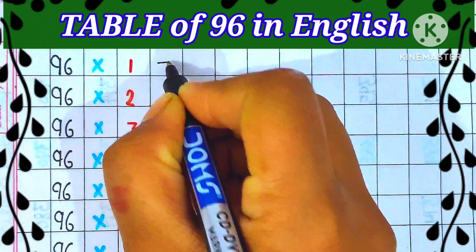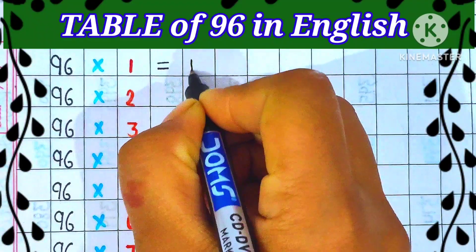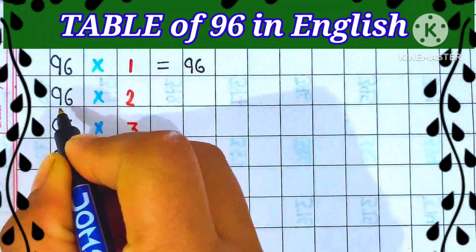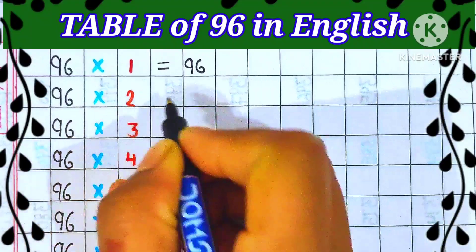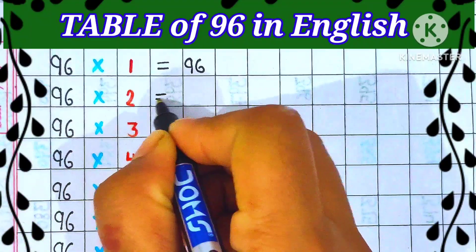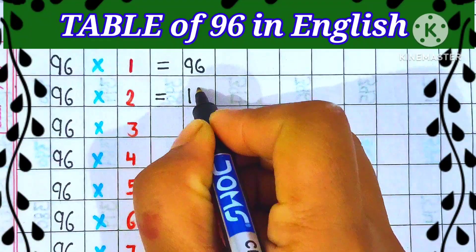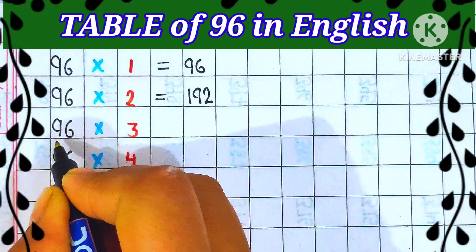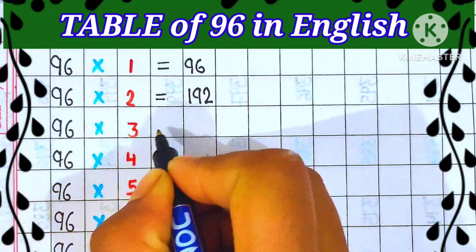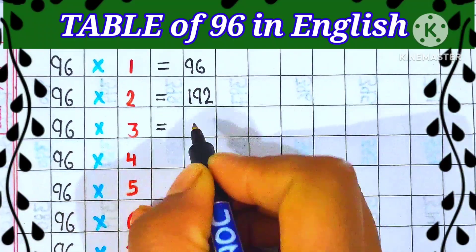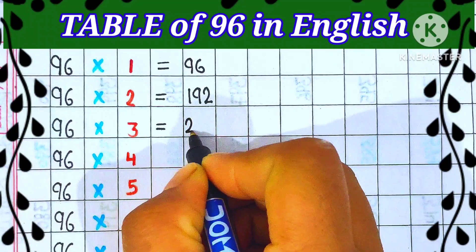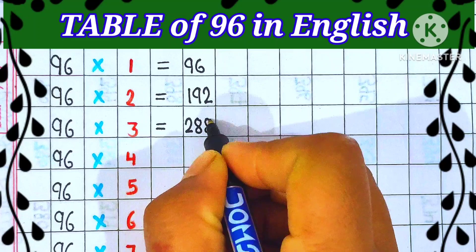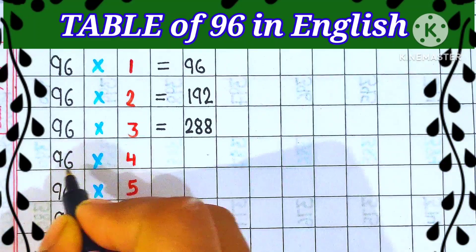96 ones are 96, 96 twos are 192, 96 threes are 288.